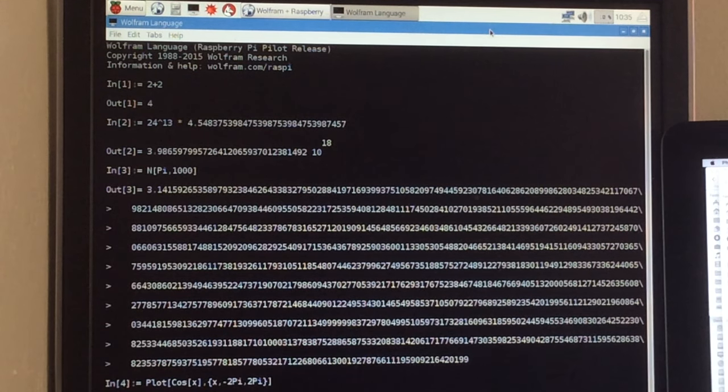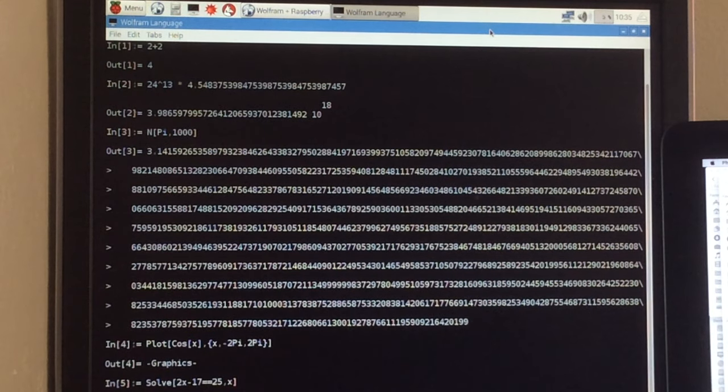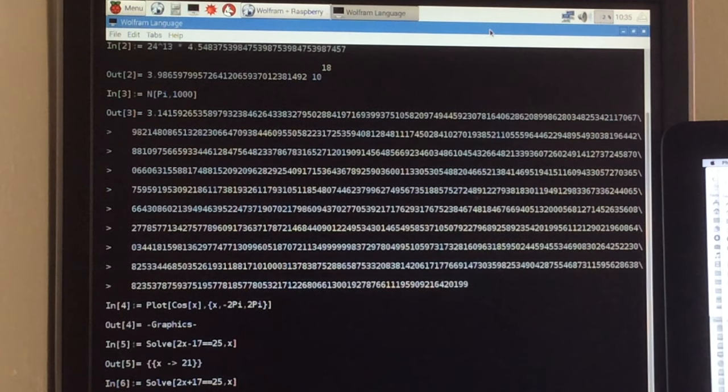Or you can do things like compute pi to 1,000 digits. There's the first 1,000 digits of pi in basically an instant. Where you run into problems, though, is if you're trying to create plots of functions. Let's create a plot of the trigonometric function. We're going to plot cosine of x with x ranging from minus 2 pi to 2 pi. It just comes back and says there's graphics associated with that, but I can't show you what that graphics is. We've kind of run into the limit of graphically what this can do.